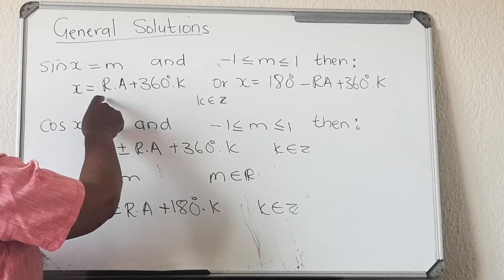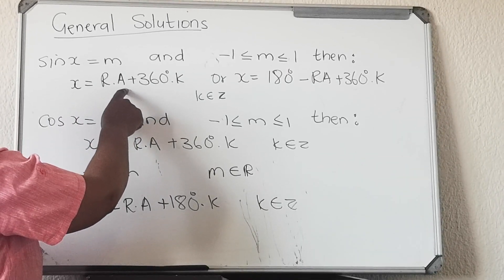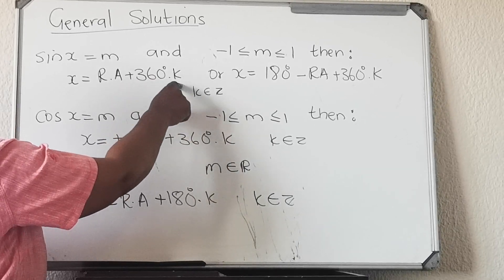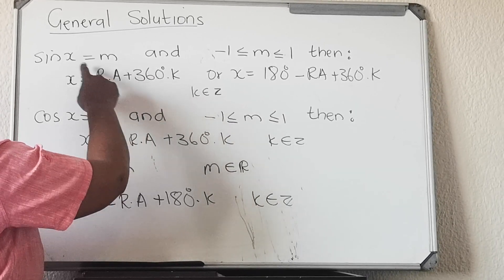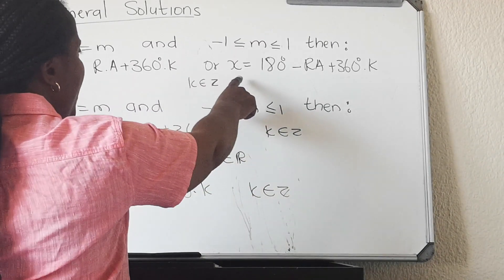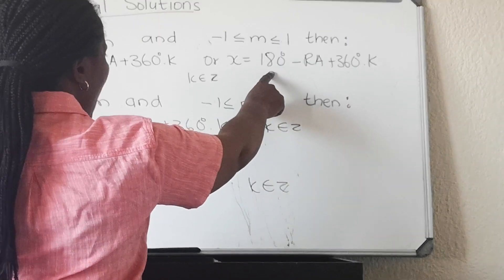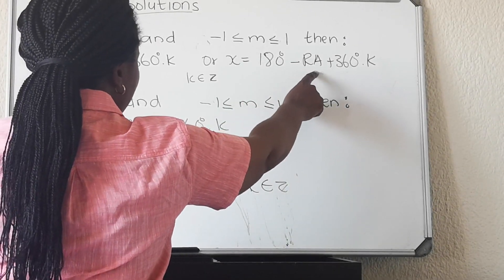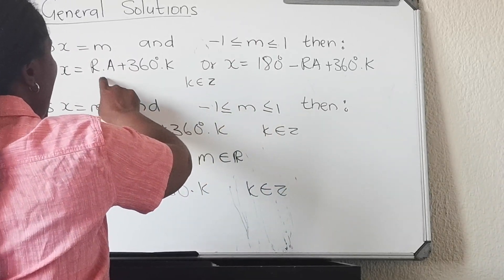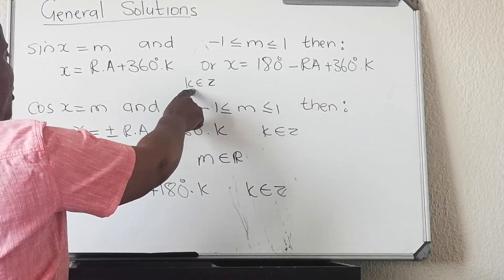If this restriction is satisfied, then solving for x you're gonna have x equals RA (stands for reference angle) plus 360k. The 360 is from the sine period. You have two solutions for sine: the other one is x equals 180 minus reference angle plus 360k.